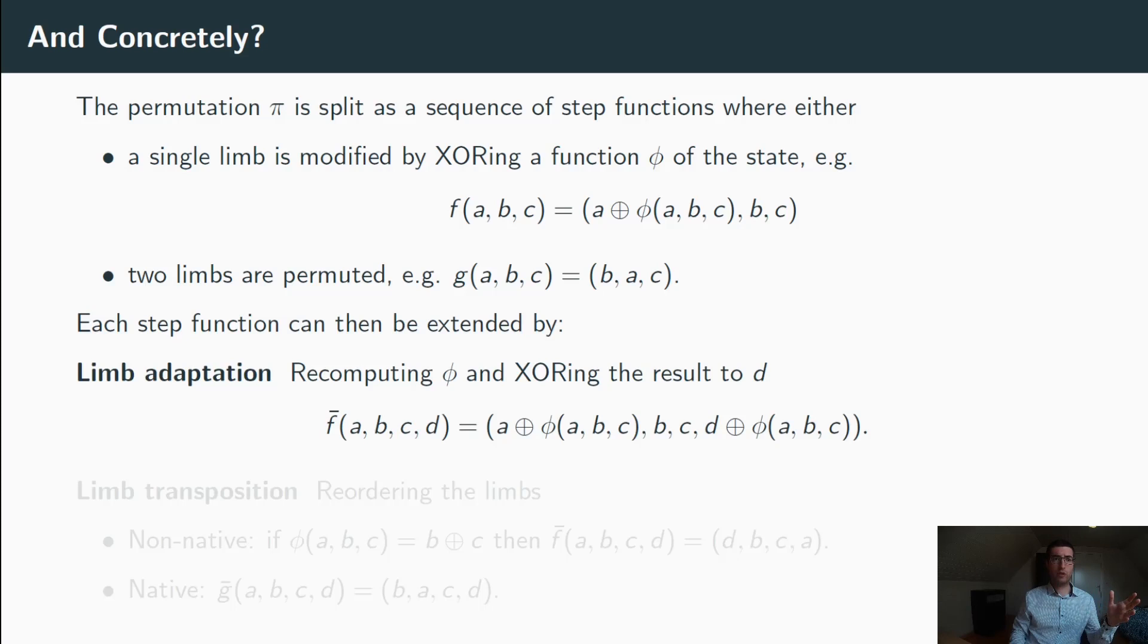The reason why we choose such step functions is that they can be efficiently extended into a code-abiding step function. And the first method to do that, which is also the most generic one and can always be used, is called limb adaptation. Limb adaptation consists in recomputing phi a second time and adapting the parity limb by adding the output of phi to it. In this method, it's very important that phi is not computed only once, but really twice independently. Because if this is not the case, a fault injected in the computation of phi will lead to the same faulty outputs being added to two different limbs, which would then compensate when adding the limbs together in the parity equation. The limb adaptation has a performance overhead of 100%, and while it might not seem great, it has the advantage that the size of the state is only increased by a third instead of being doubled.